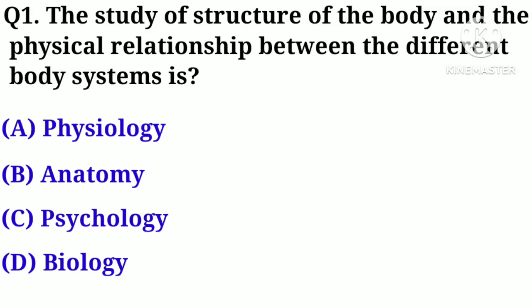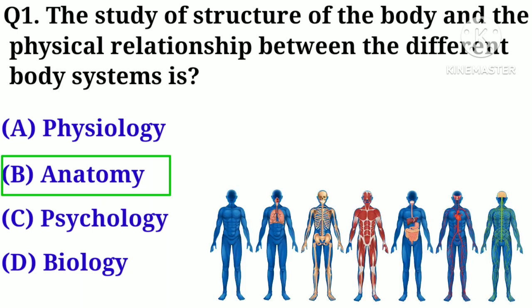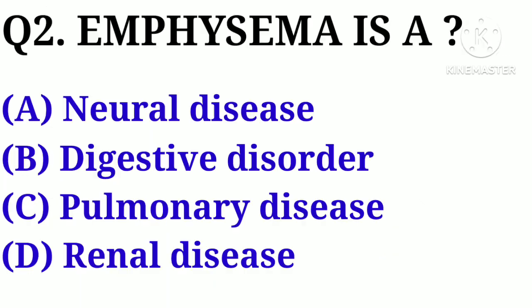Question number 1. The study of structure of the body and the physical relationship between the different body systems is: Option A. Physiology, B. Anatomy, C. Psychology, D. Biology. Correct answer: Option B. Anatomy.